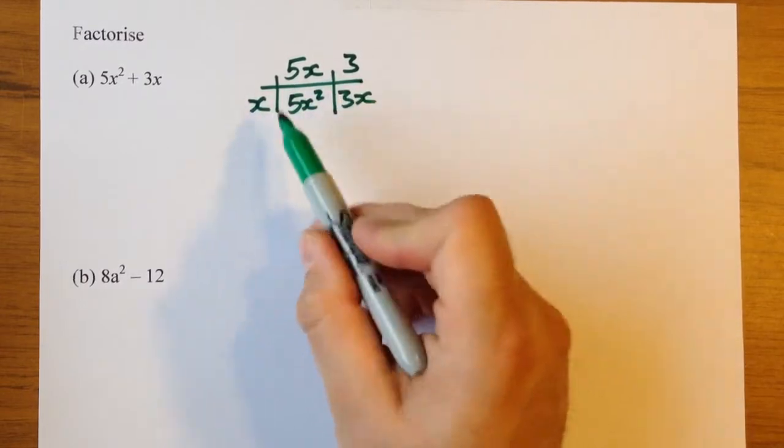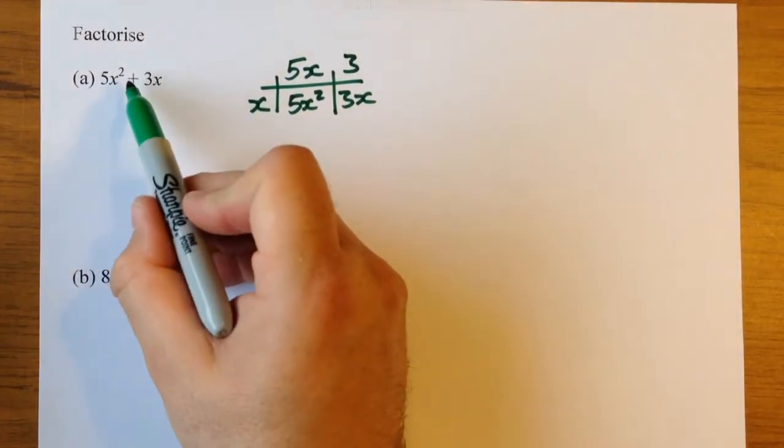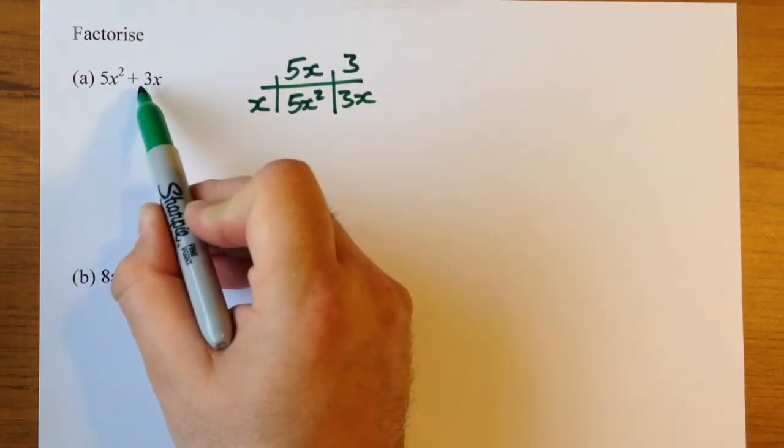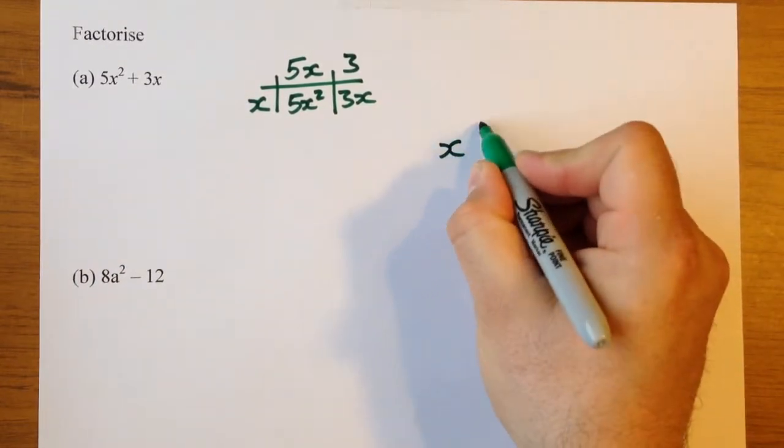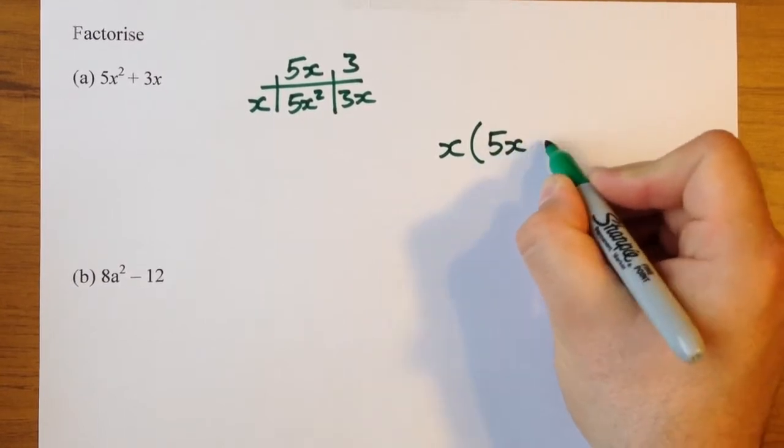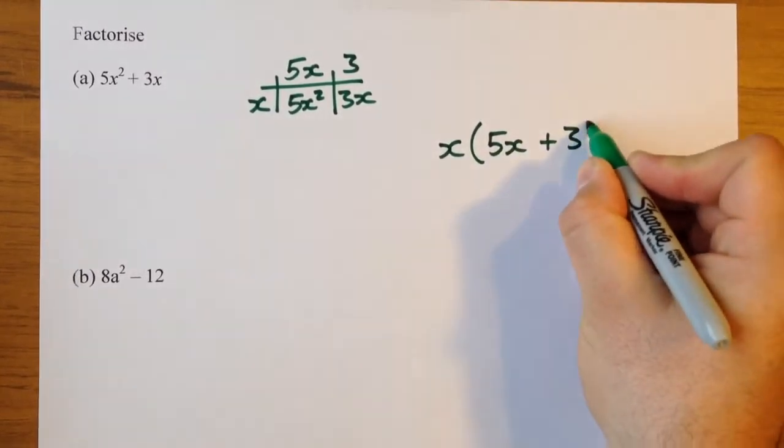Now we can't leave the answer like that - this is just our working out. Notice it's a plus in between the two expressions here. So the final answer is x bracket 5x plus 3.